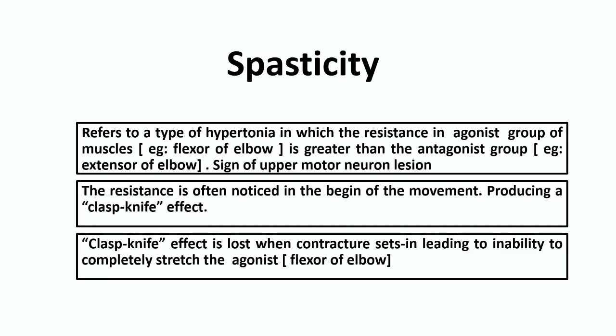However, when contracture sets in, the initial clasp knife effect is lost, leading to an inability to completely stretch the agonist muscle. The elbow then remains in a fixed state, such as a flexed position.